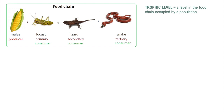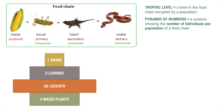We can also show food relations in an ecosystem with a pyramid of numbers. A pyramid of numbers is a visualization of a food chain that also shows the number of individuals per population. It shows not only what organism eats the other, but how many organisms can be fed by a certain amount of organisms. In this case, five maize plants can be eaten by 50 locusts, the 50 locusts are eaten by five lizards, and those five lizards can feed one snake. You can see it doesn't always have a proper pyramid shape, because fewer plants feed a large number of locusts.